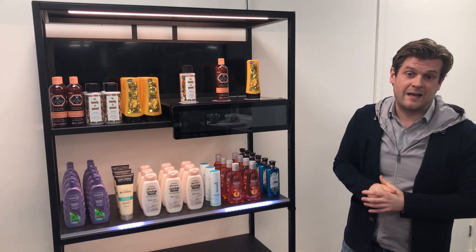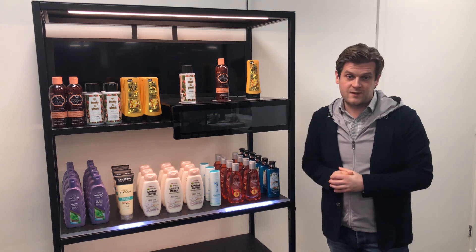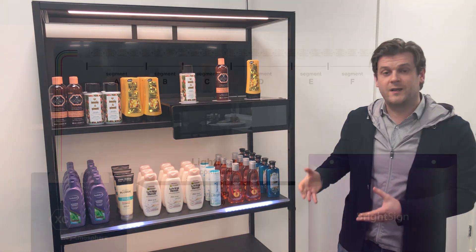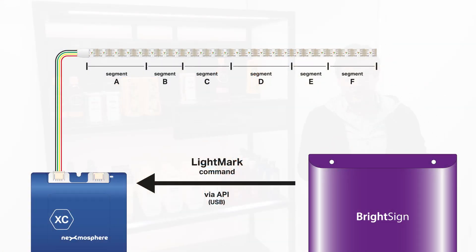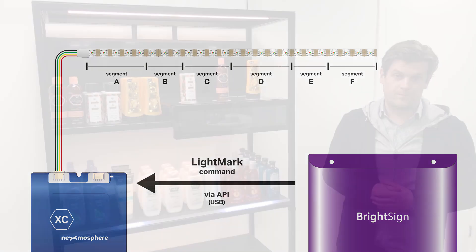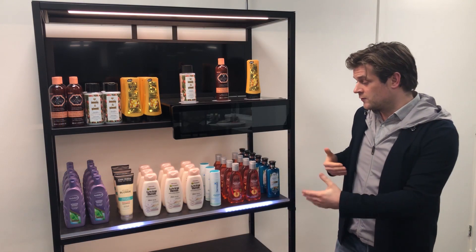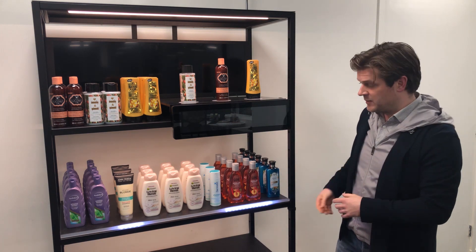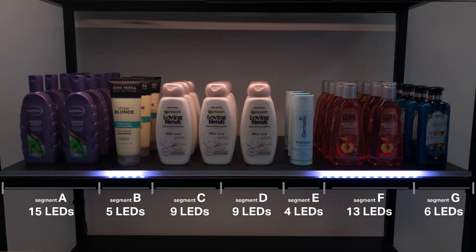Dividing the pixel LED strip into segments is done purely by sending Lightmark commands via our API from a digital signage player to the Nexmosphere controller. So if you want to rearrange the segments there is no need for any hardware adjustments. Simply send the appropriate Lightmark command to the controller and the segments will be rearranged according to your specification.